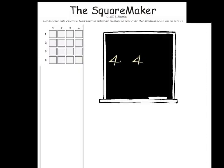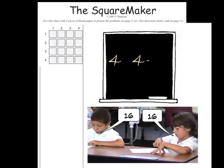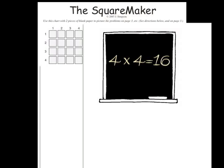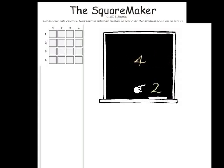Then ask them to construct four squared as you write two fours on the board. Ask them how much is that altogether, and again, what sign should we use? Then ask them how many fours are there. That's why we can write four squared with the superscript two.